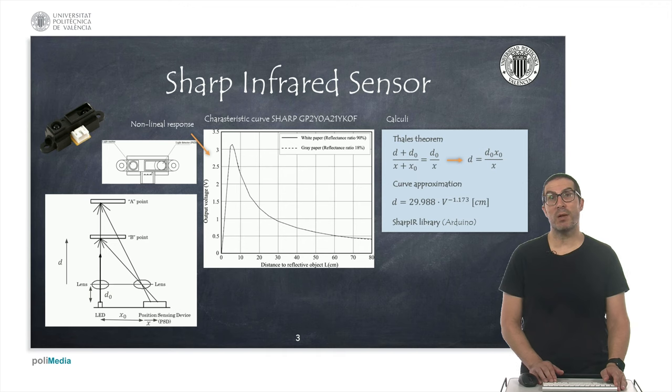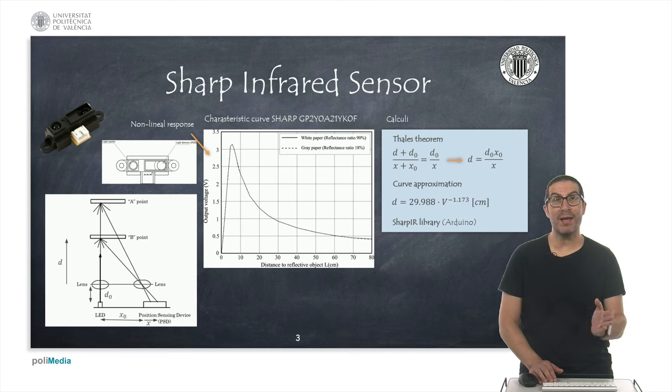The way to compute the distance is basically based on the angle or the position of the ray that is detected. You can see here the calculation we can use for this distance computation, and we can see that it's inversely proportional to the detected position, which makes the sensor response clearly non-linear as you can see also in the characteristic curve of the sensor.